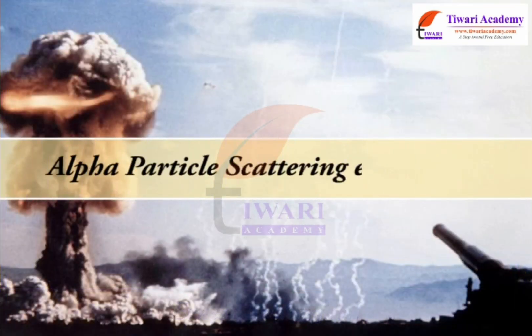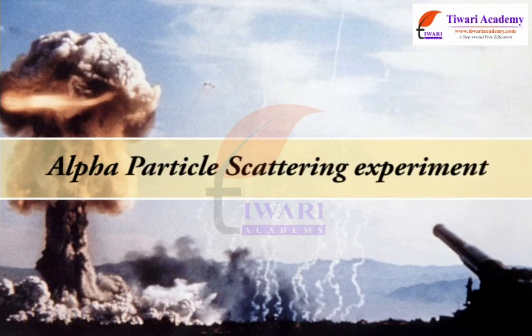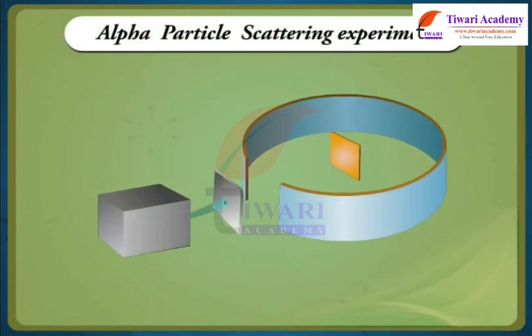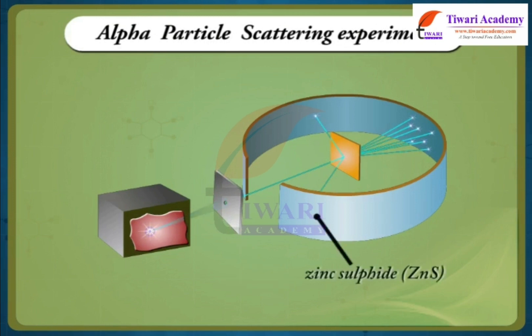Alpha Particle Scattering Experiment. The experiment involved the bombardment of a thin sheet of gold by alpha particles. These particles were obtained in the form of a narrow beam by passing through a slit in a lead plate. A circular screen coated with zinc sulphide, ZnS, was placed around the foil to detect the deflection suffered by alpha particles. Whenever an alpha particle struck the screen, a tiny flash of light was produced at that point.